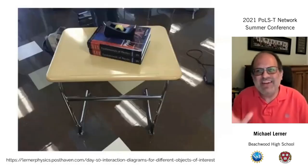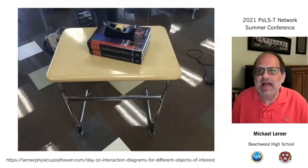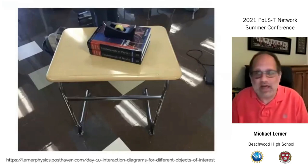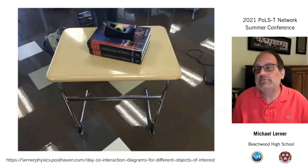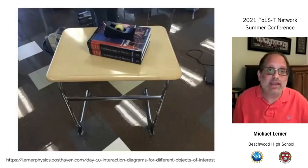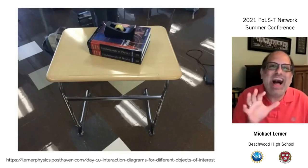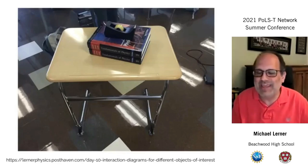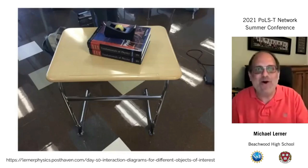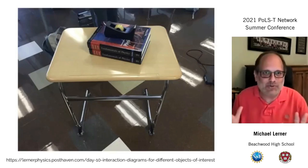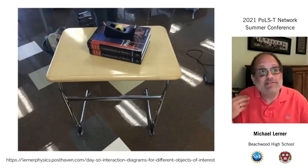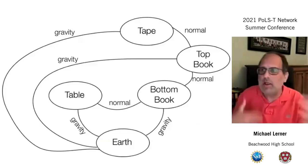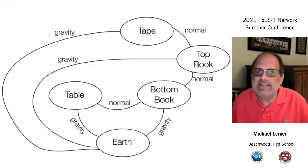Here's a relatively boring lesson I do most years — not all years — where I give students a situation with a couple of books, some tape, and a table, and I ask them to draw interaction diagrams and force diagrams for different objects. I call them interaction diagrams; you might have heard them called system schema. If you don't know what I'm talking about, go look up system schema — they very well may change your whole teaching. The interaction diagrams students normally draw for this situation would look something like this, with a fair number of normal and gravitational interactions.